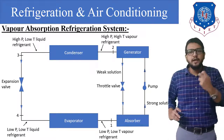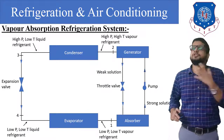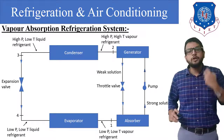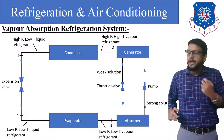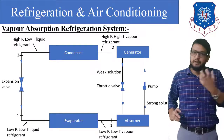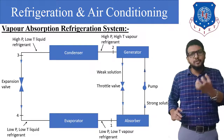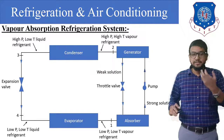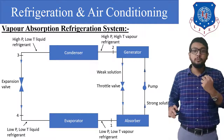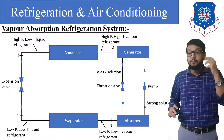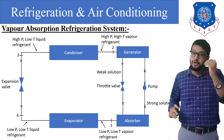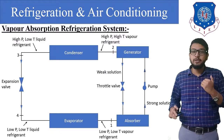The new component is the absorber. Inside the absorber we place cold water. As soon as the ammonia refrigerant enters the absorber, it dissolves in the cold water and is absorbed — hence the name absorber. The function of the pump is to increase the pressure up to condenser pressure and supply the solution to the generator.